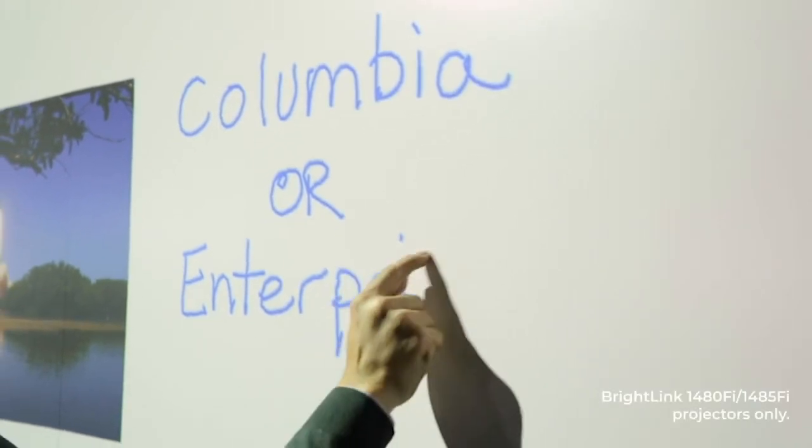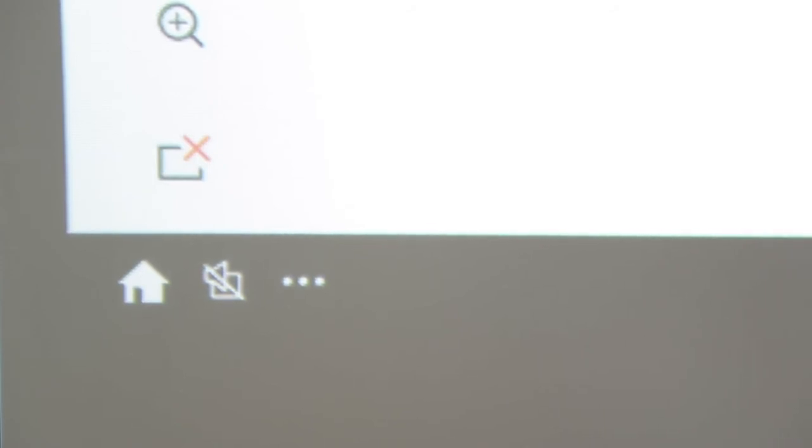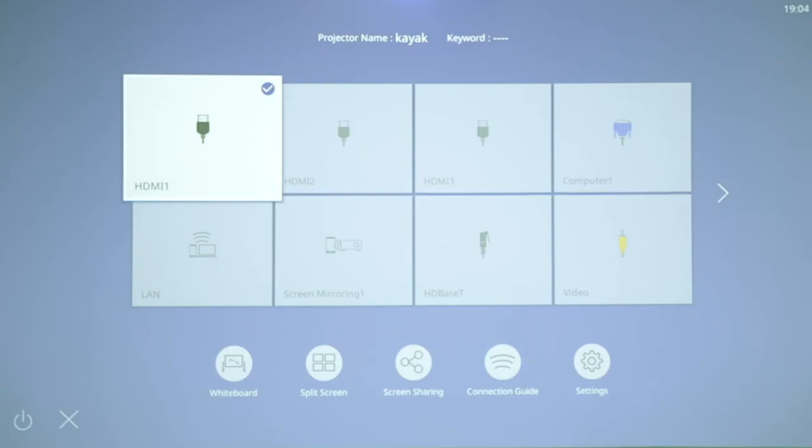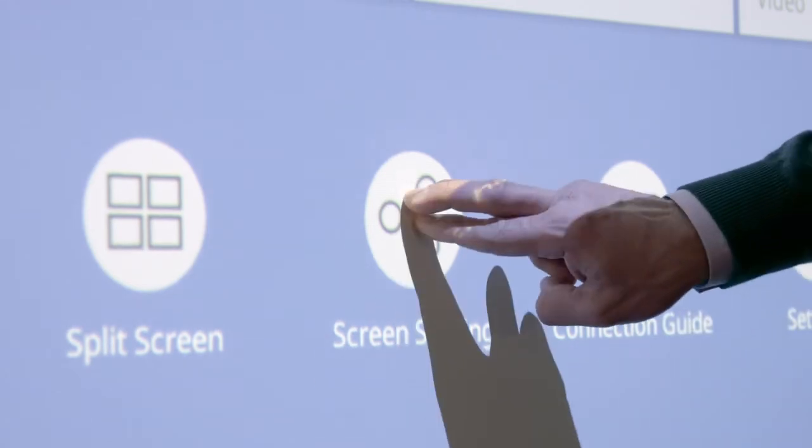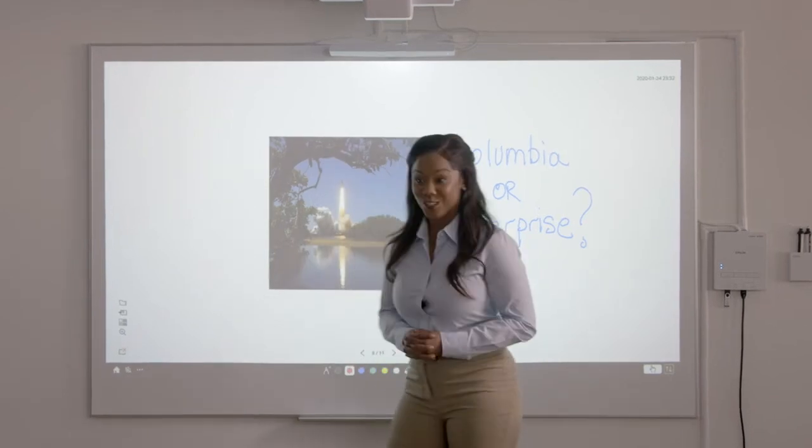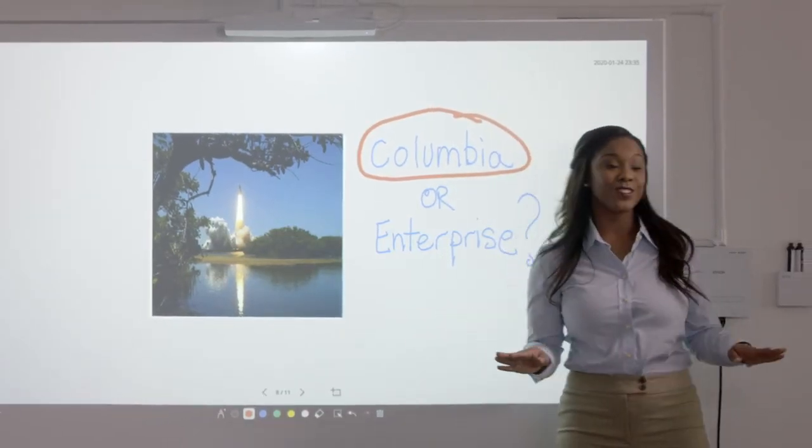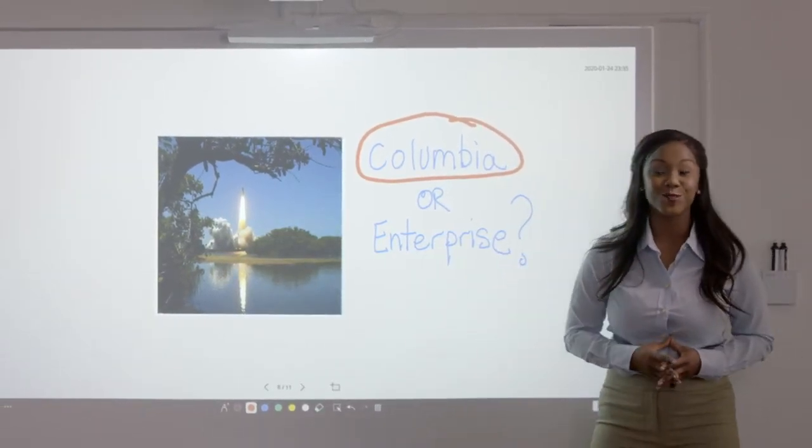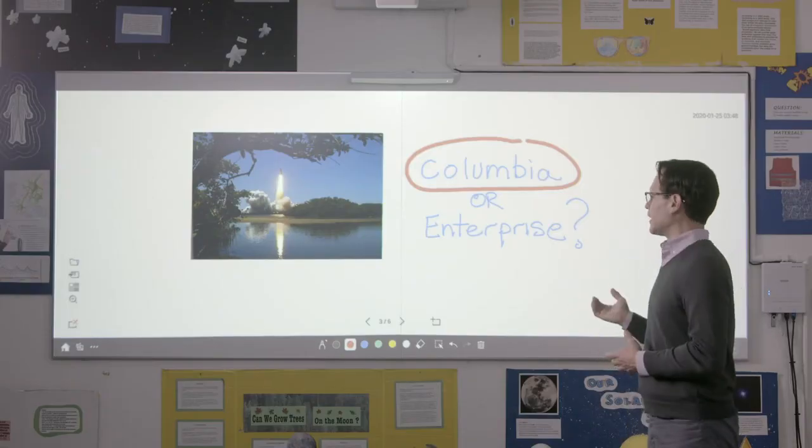I can easily share my whiteboard content with other Brightlink projectors too. Simply select the home button on the bottom left of the display to access the home screen. Then press screen sharing to initiate the shared session. I can share my whiteboard content with other network connected Brightlink 1480 series projectors. When your Brightlink projectors are on the same network, it is easy to share the whiteboard space, allowing students or teachers in other classrooms to view and contribute to the whiteboard session. They'll be able to see anything on my whiteboard and I'll be able to see anything they write.